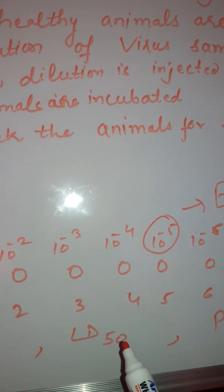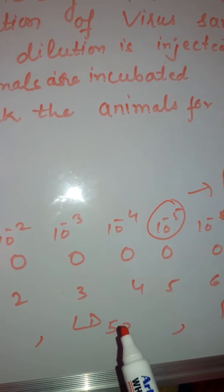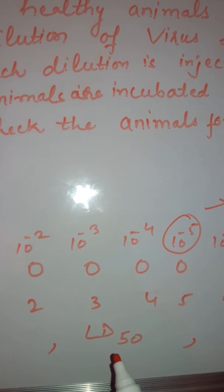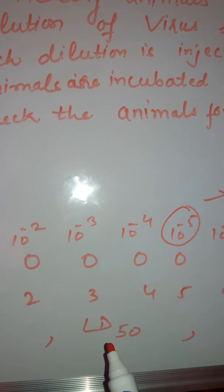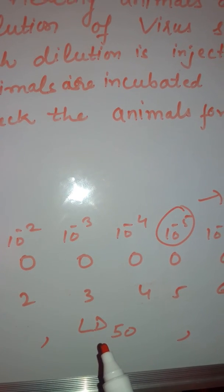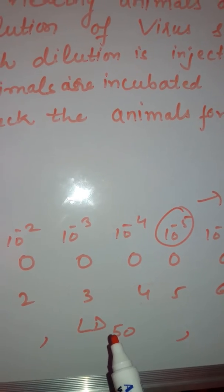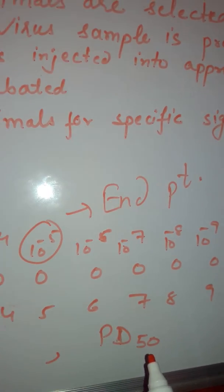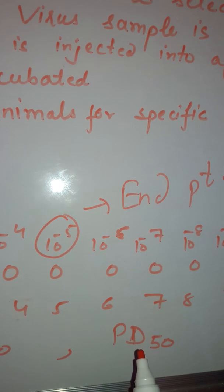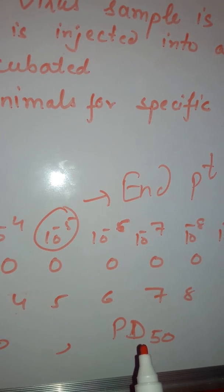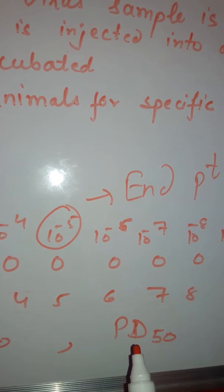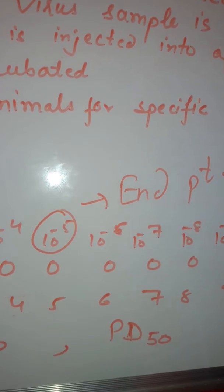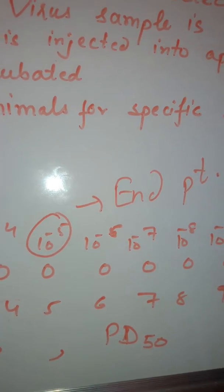Some viruses will produce only infection, expressed as ID50 — the infectious dose at which 50% of the animals get infected. Some viruses are lethal and cause death, expressed as LD50 — the lethal dose at which 50% of the animals get killed. Some viruses cause paralysis, expressed as PD50 — the paralytic dose at which 50% of the animals get paralyzed.